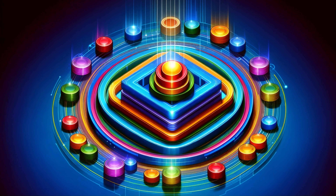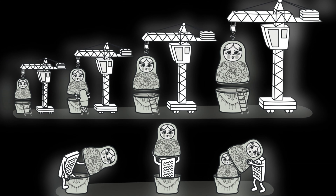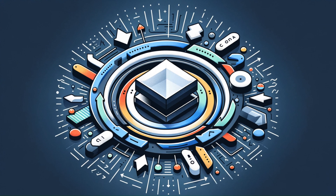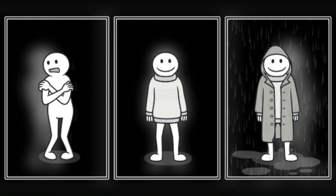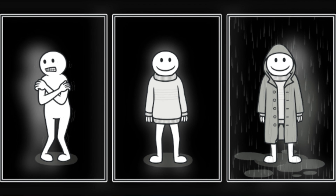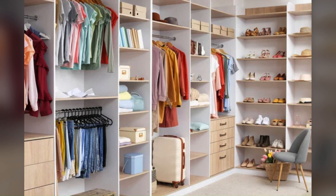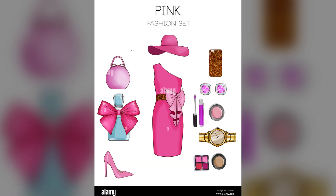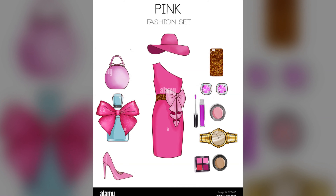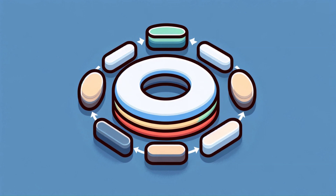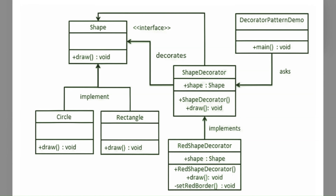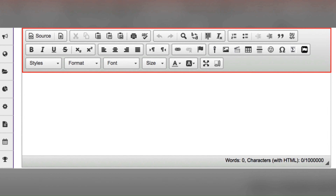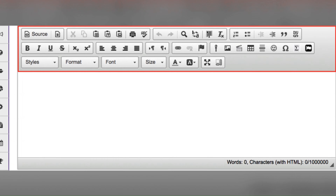Now let's talk about the Decorator pattern. This adds new functionality to objects dynamically by placing them inside special wrapper objects. Using decorators, you can modify an object's behavior at runtime. Think of it like putting on clothes and accessories — you start with a simple outfit like a t-shirt and jeans, and dynamically add a jacket, scarf, jewelry, or glasses. The accessories are the decorators placed on top of the underlying clothes.